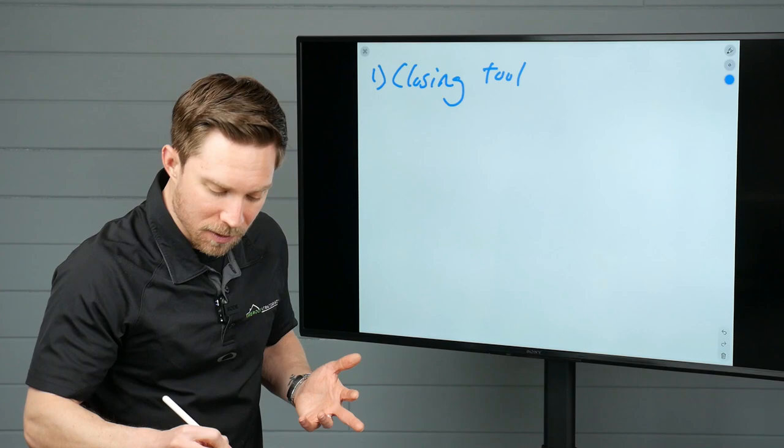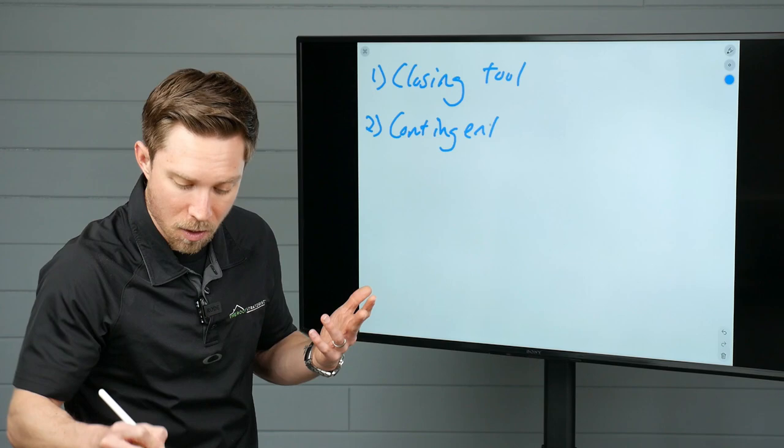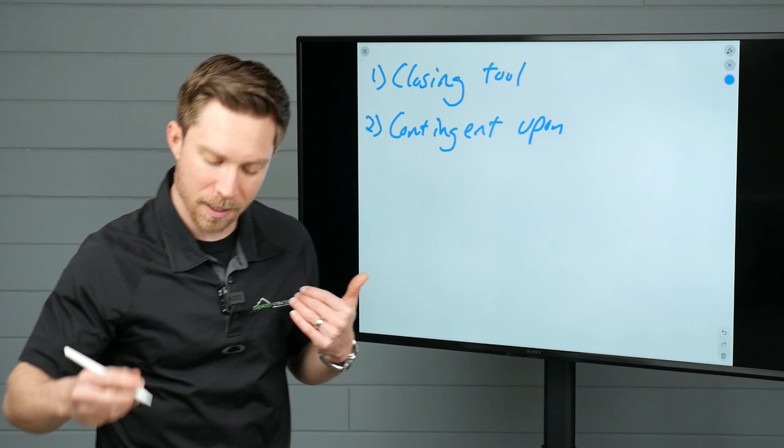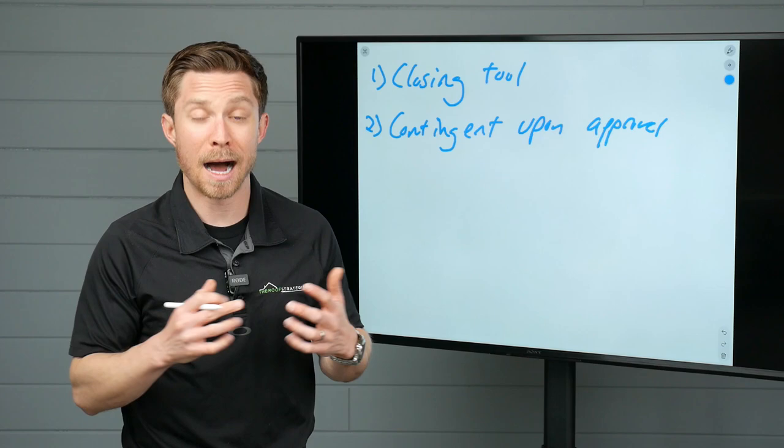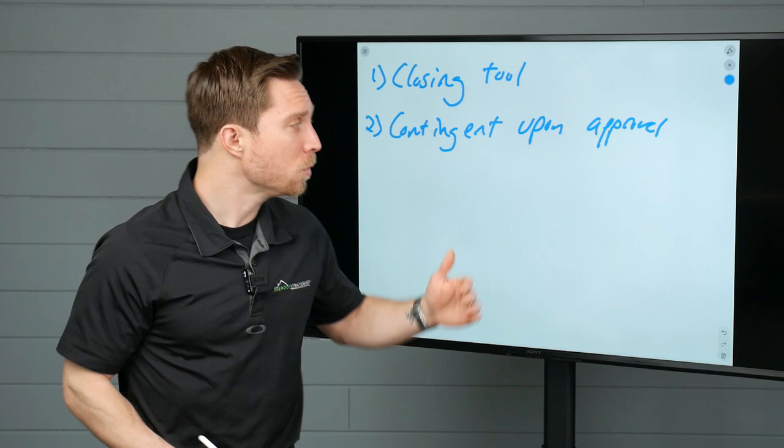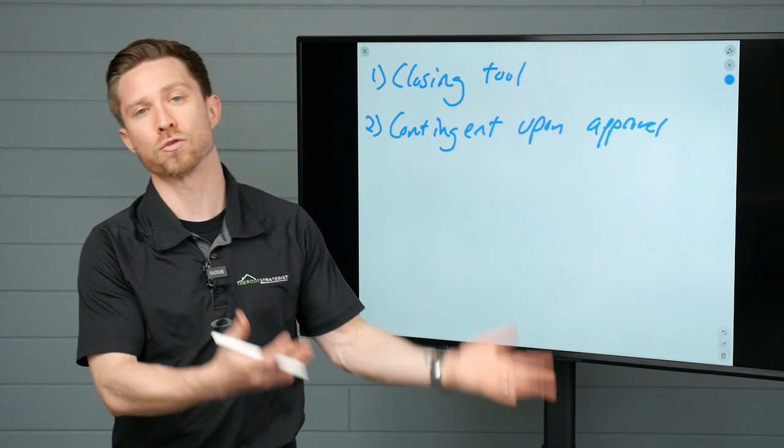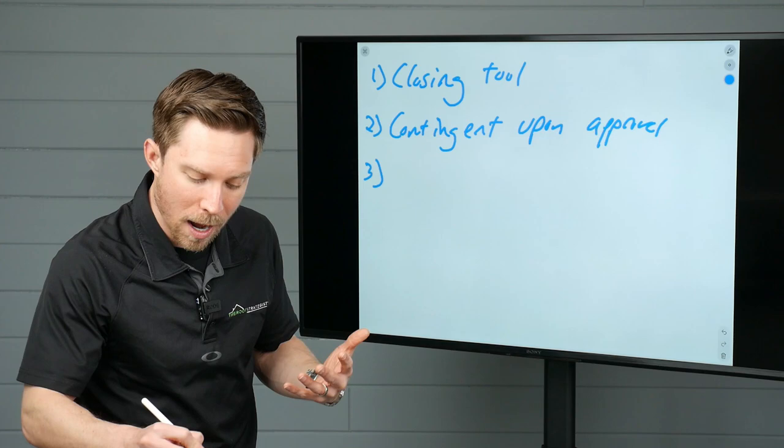Now, what do I mean by that? It is a way to lock in the deal, have that handshake say, we're going to do this work for you and we're going to be the contractor of choice to actually do the roof. Next, it is again contingent upon approval, meaning if the insurance company says no, we're not replacing it, they don't owe you anything. So, it removes risk.